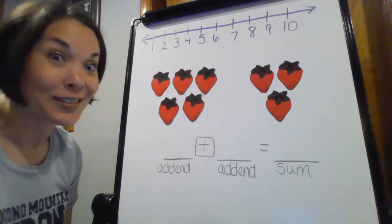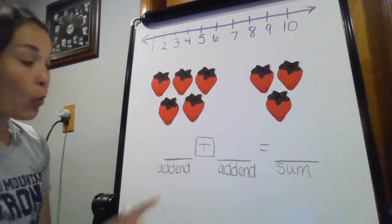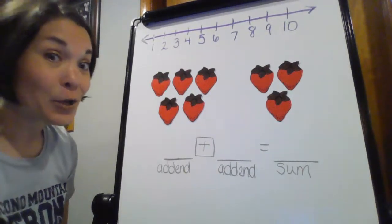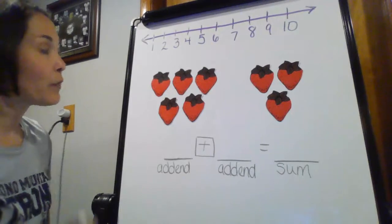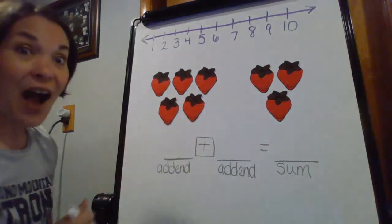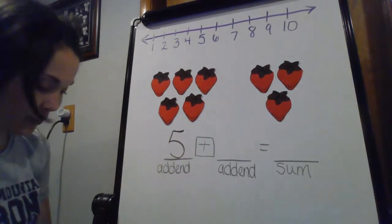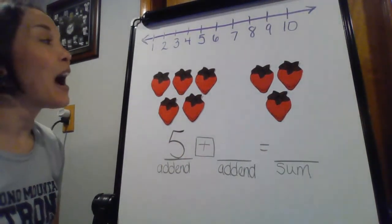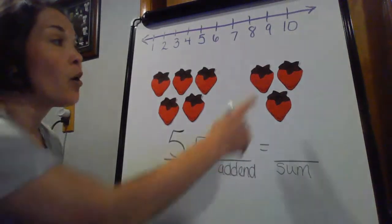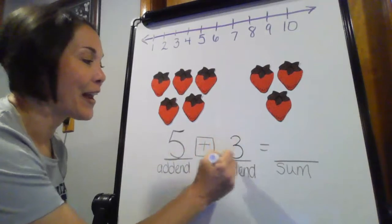So, let's make our equation. Let's make that number sentence. All right. So, let's talk about what's my first addend going to be. Well, I picked one, two, three, four, five strawberries. All right. Now, I picked how many more? One, two, three more. There's my other addend.